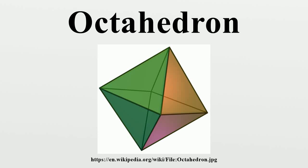In geometry, an octahedron is a polyhedron with eight faces. A regular octahedron is a platonic solid composed of eight equilateral triangles, four of which meet at each vertex. A regular octahedron is the dual polyhedron of a cube. It is a rectified tetrahedron. It is a square bipyramid in any of three orthogonal orientations.